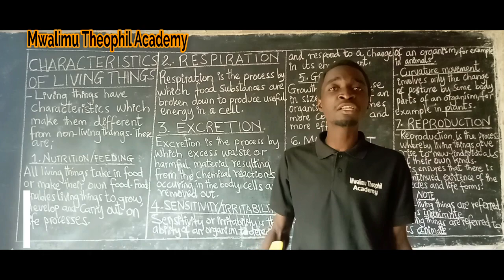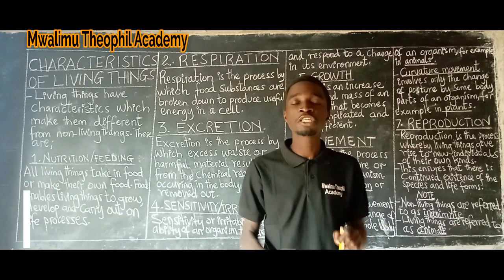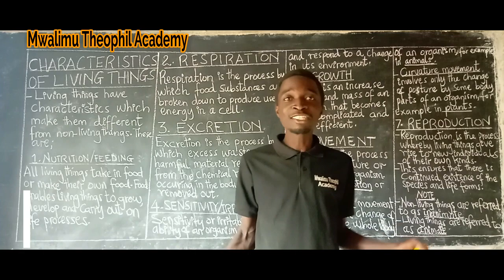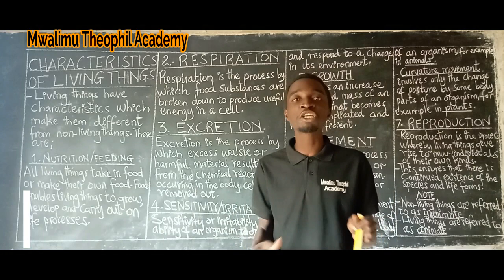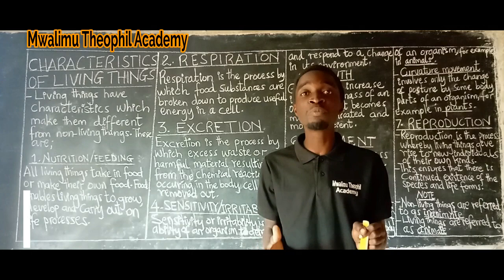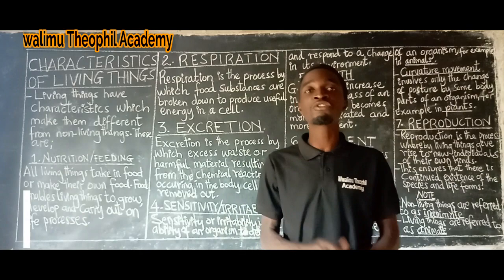Examples of waste products removed from the body include: first, excess water; second, ammonia; and third, carbon dioxide. These waste products must be removed from the body so that cells can continue performing properly. Accumulation of waste products could lead to improper cell functioning and ultimately death of the individual.